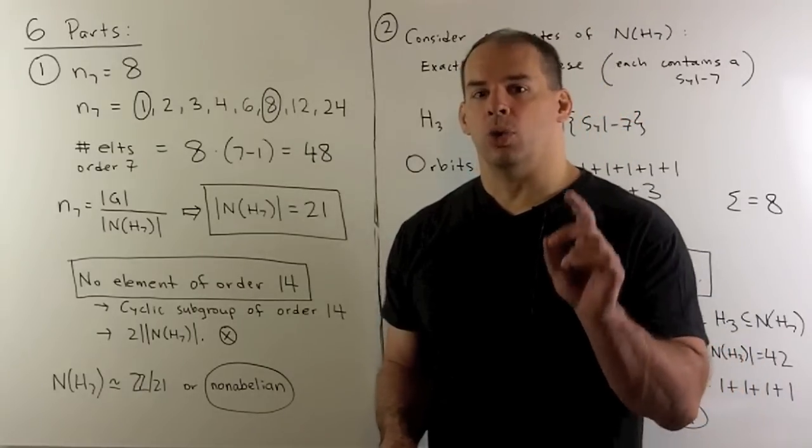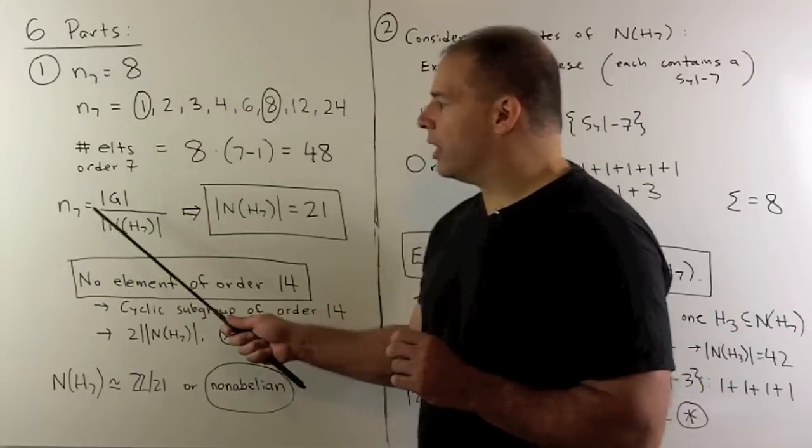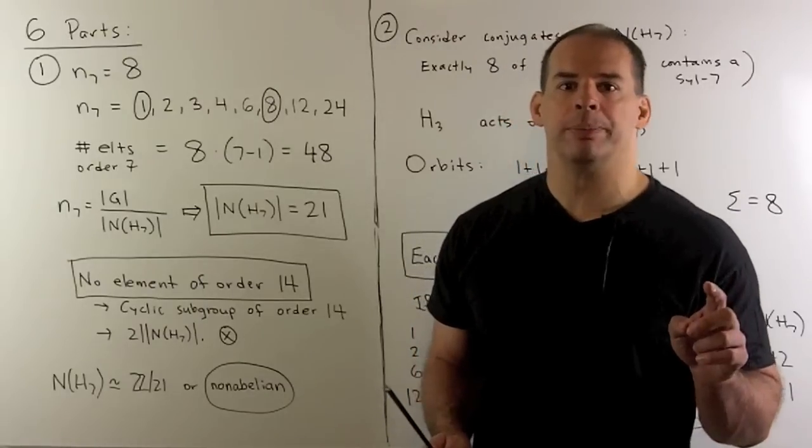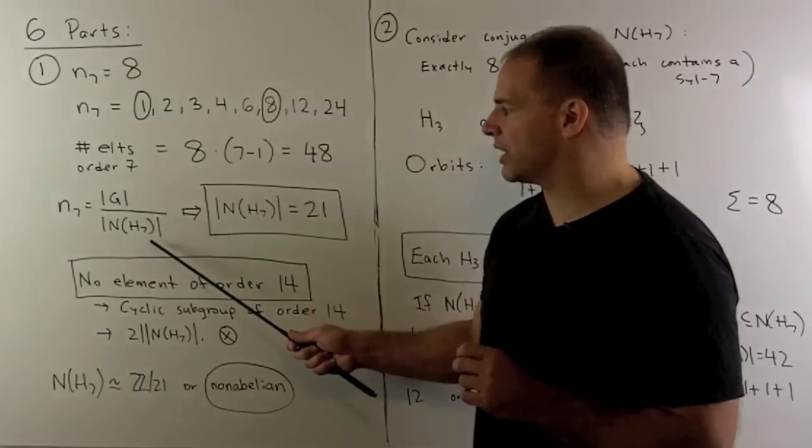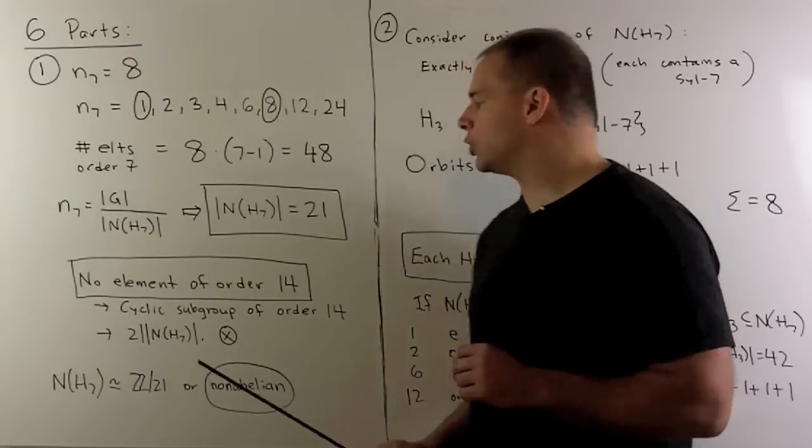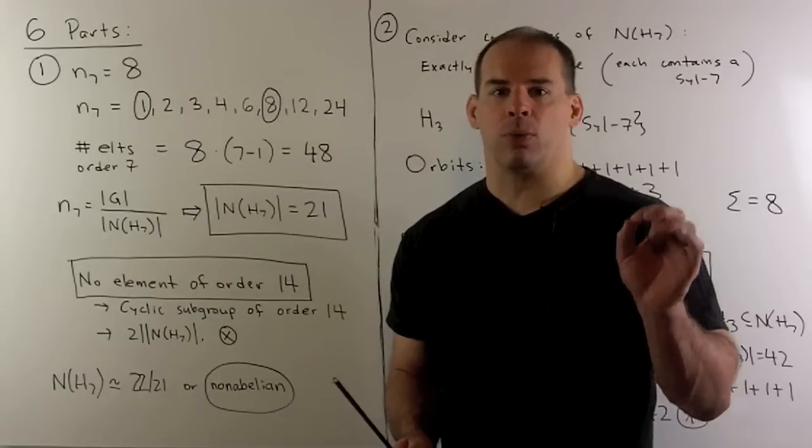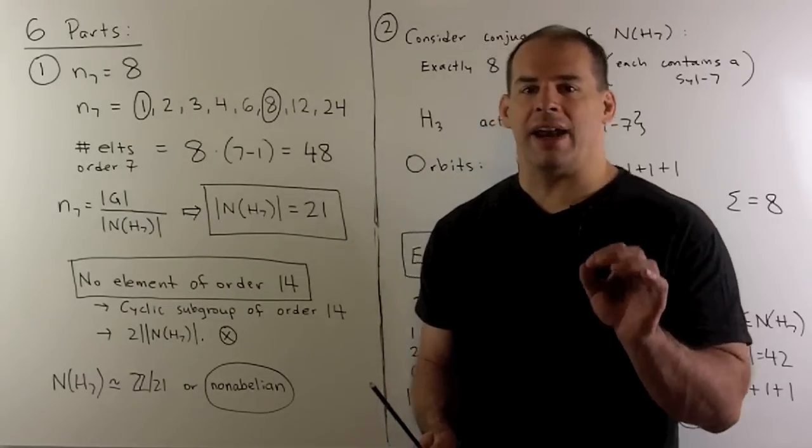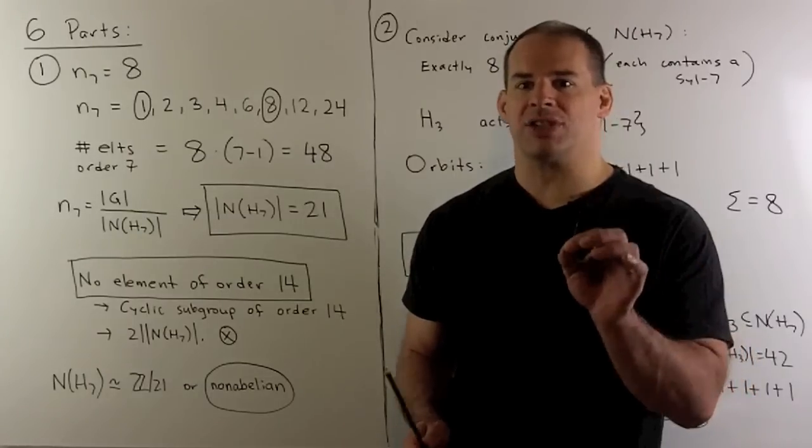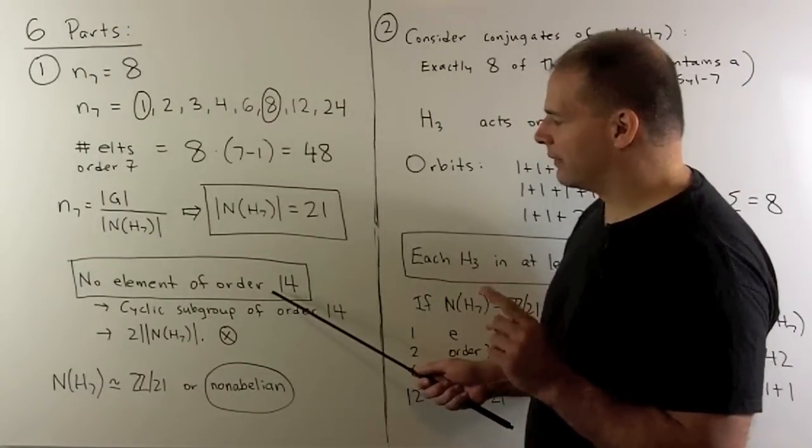Next, consider the normalizer of a Sylow 7. So, our recipe for counting, the number of Sylow 7 subgroups is equal to the order of the group divided by the normalizer of any Sylow 7 subgroup. You can use any one you want. So, let's call one H sub 7. That'll give us the order of the normalizer is equal to 168 over 8, or 21. Now, that gives us immediately, there's no element in our group of order 14. If there were, then I'd have a cyclic subgroup of order 14. That would mean we have an element of order 2 that normalizes some Sylow 7, and then 2 would have to divide 21. So, that doesn't happen.